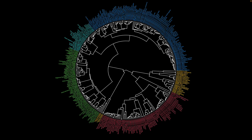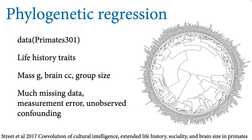One of the things evolutionary biologists and anthropologists try to do is use the diversity of primates to understand evolution in long-lived animals that produce small litters of offspring — something all primates share regardless of size or location. We're going to take an extended tour through a particular example to teach you how to use Gaussian process regression to deal with phylogenetic confounds — a family of methods casually called 'phylogenetic regression.' The dataset is primates301 (301 species) from a 2017 paper by Sally Street and colleagues, and mostly contains life history traits.